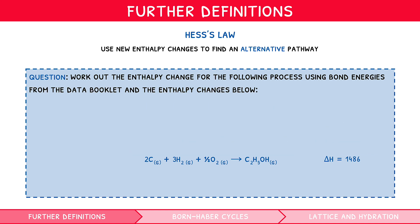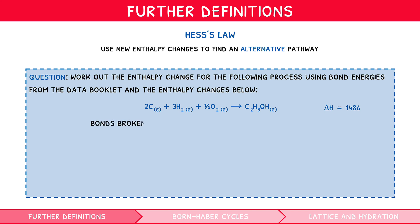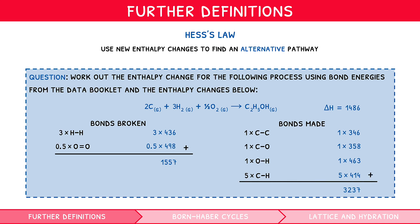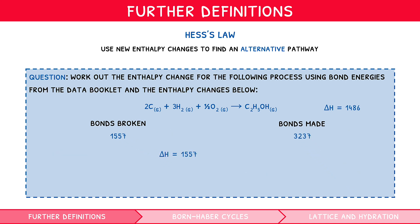Now we can find the enthalpy change for the reaction using our formula: total enthalpy of bonds broken minus total enthalpy of bonds made. Bonds broken: 3 × H–H bonds plus 0.5 × O=O bonds, which gives 1557 kJ. Bonds made: 1 C–C bond, plus 1 C–O bond, plus 1 O–H bond, plus 5 C–H bonds, which gives 3237 kJ. So the reaction enthalpy change is 1557 − 3237 = −1680 kJ. We therefore add this to the overall enthalpy change to get the final answer: −194 kJ.